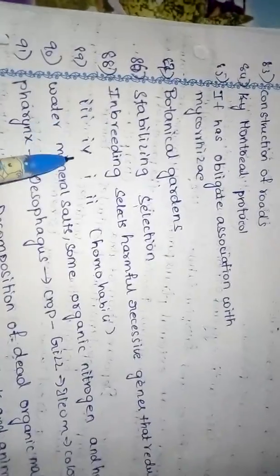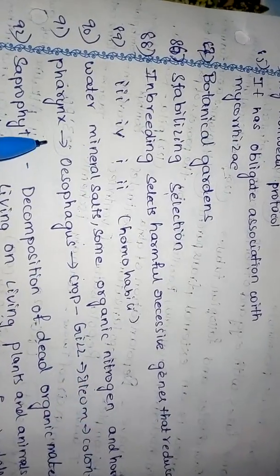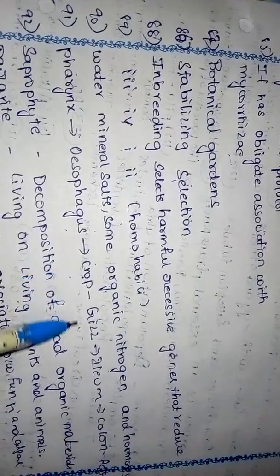Inbreeding selects harmful recessive genes that reduce 3,4,1 to Homo habilis matching. Water, minerals, salts, some organic nitrogen and hormones. Pharynx to esophagus to crop to gizzard. Ileum, caecum, ileum colon and rectum.